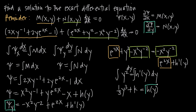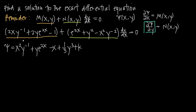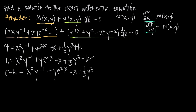Now we have a value for h(y), so we plug (1/3)y³ + k into our psi equation: psi = x²y^(−1) + ye^(2x) − x + (1/3)y³ + k. The general or implicit solution to this exact differential equation is found by setting psi equal to c. So we get c equal to everything on the right-hand side. Since we have two constants, c and k, we subtract k from both sides, and because they're both constants, we combine them into a single constant c.